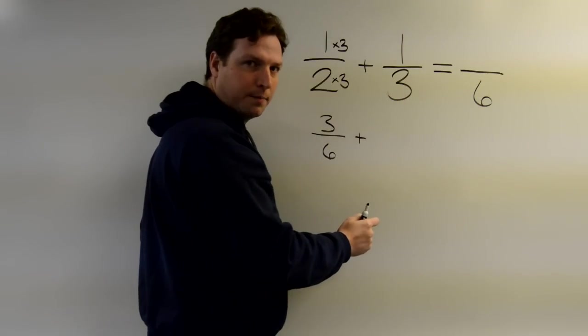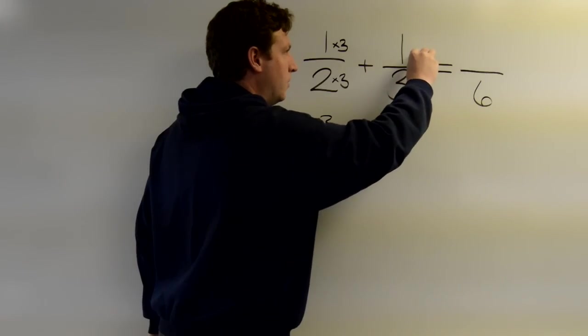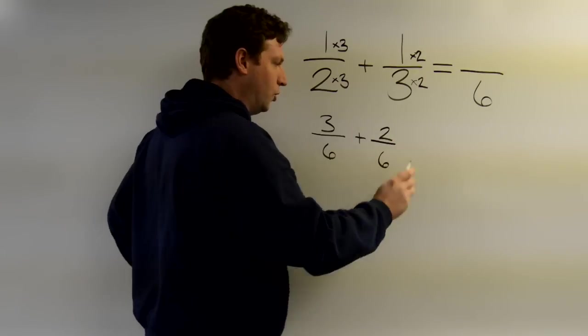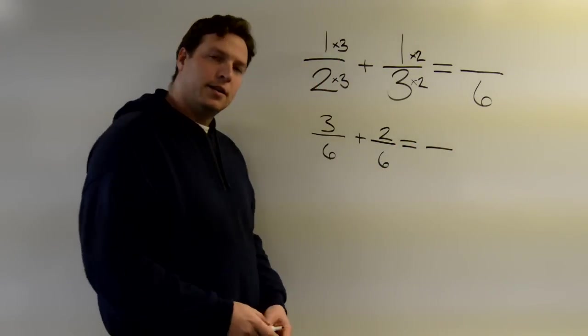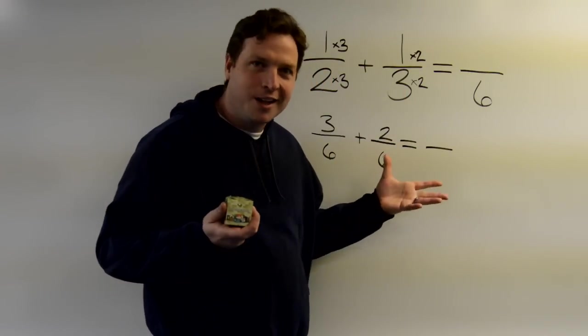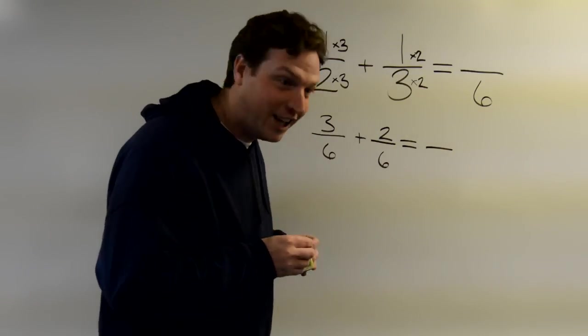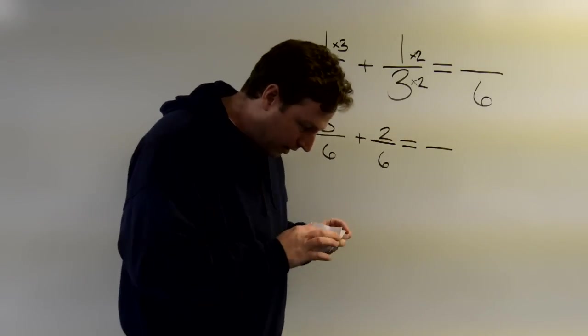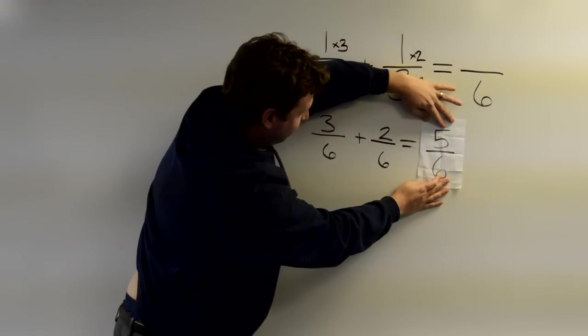What do you think I multiply this one by? Right, two. I need to do it to the top and the bottom and I get six and two. Easy enough, right? And now we just add straight across. Five-sixths, it's the answer.